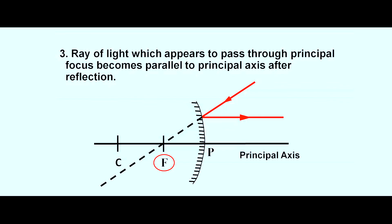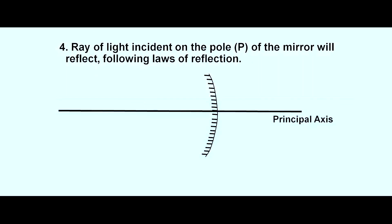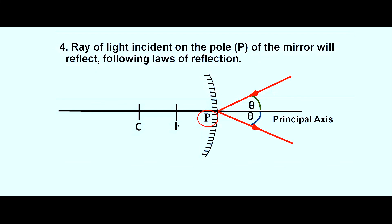The fourth rule is the same as for a concave mirror: a ray of light incident on the pole of the mirror gets reflected following the laws of reflection. In the diagram, the ray is incident at the pole making angle theta with the principal axis, and it is reflected making the same angle theta, obeying the law of reflection. These are the four rules for constructing ray diagrams in the case of a convex mirror.